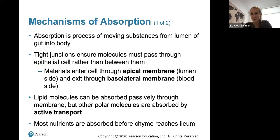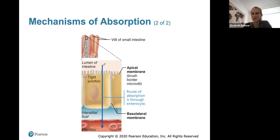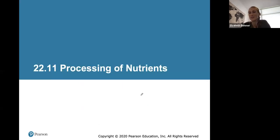Absorption is moving substances from the lumen of the gut into the body and into the circulatory system. Tight junctions ensure that molecules must pass through epithelial cells. Lipid molecules can be absorbed passively, but large polar molecules are absorbed through active transport, requiring ATP. Most nutrients are absorbed before the chyme reaches the ileum — the last part of the small intestine. Nutrients absorbed through the epithelial cells get absorbed into the capillary, which takes everything to the liver for processing and detoxification.